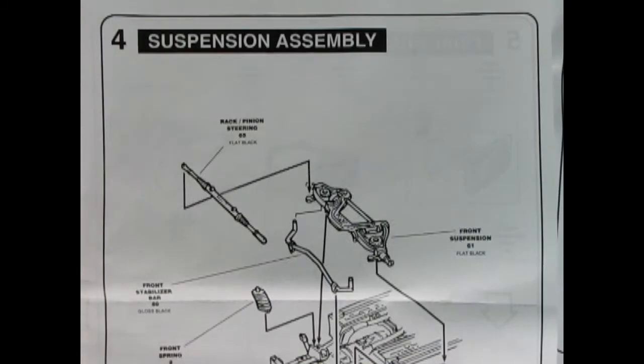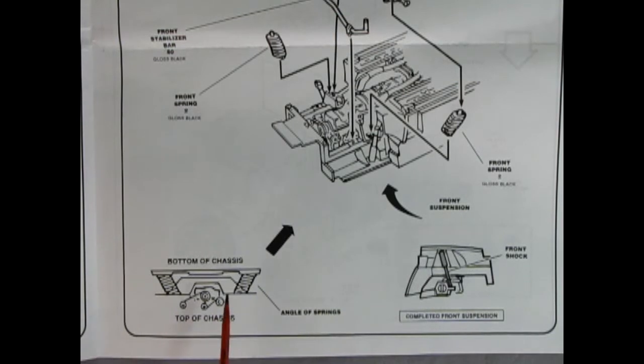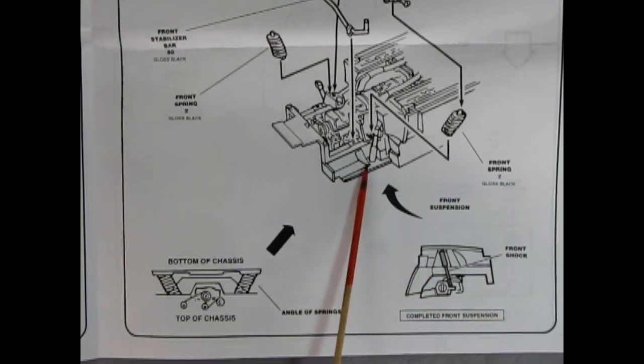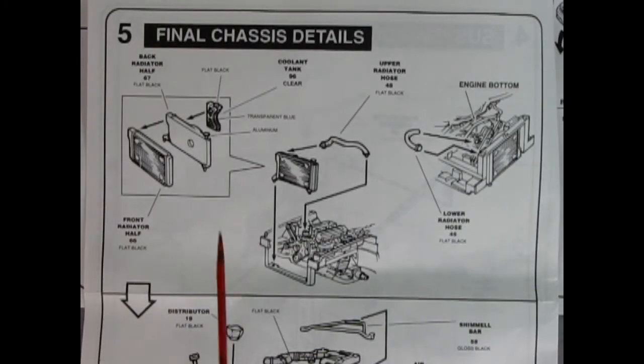In panel four we see our suspension assembly and here we've got our front suspension unit dropping in place. We've got the front springs that go in first of course, and our front stabilizer bar, and then the rack and pinion steering unit. Down here at the bottom of the page it shows how the bottom of the chassis and the angle of springs are. That's up in here, and over here we also see our front shock absorber where it's supposed to go in the wheel arch and that's shown here.